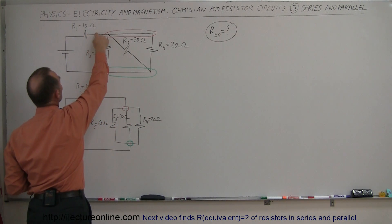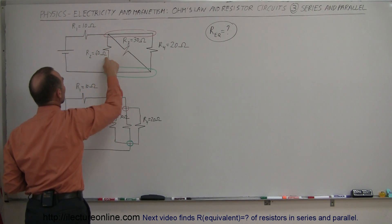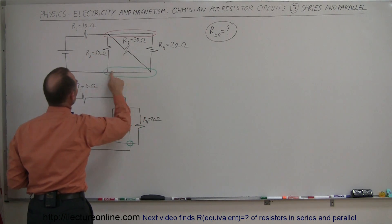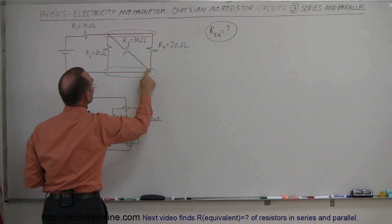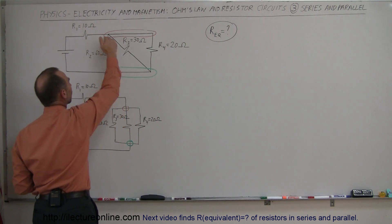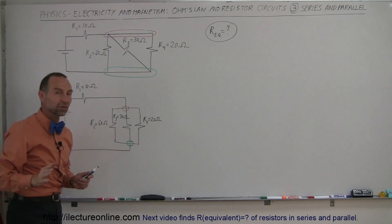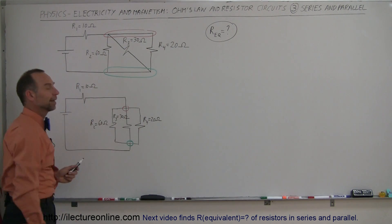Notice that when you have the current coming this way, the current can either go through the 60 ohm resistor and back to the battery, through the 30 ohm resistor and back to the battery, or through the 20 ohm resistor and back to the battery. So the current has three choices to get back to the battery. In each case you only have to pass through one resistor. So that means it looks exactly like that.